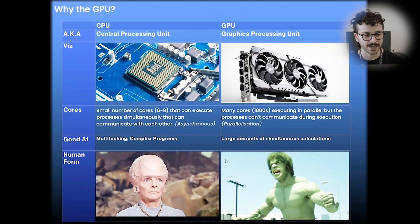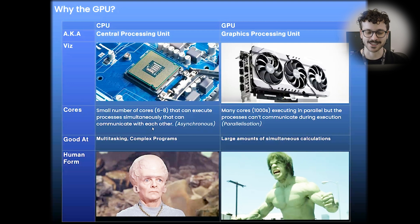So the CPU has a very small number of cores, maybe around six to eight, depending on your budget, that can execute processes simultaneously and that can communicate to each other. So it's asynchronous. It's very good at multitasking complicated problems. Every program that you use on the computer is in part done or is entirely done on the CPU. It's only some graphics applications that actually utilize the GPU. So you can kind of think of the CPU as a very brainy person, but it is a little frail.